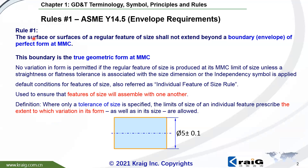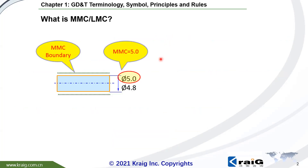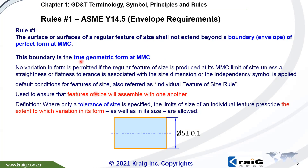Rule No. 1 means the surface or surfaces of a feature of size shall not extend beyond a boundary or envelope of perfect form at MMC. There is a boundary here, and this boundary is equal to MMC, and all of the surfaces of the feature of size should be within this boundary.